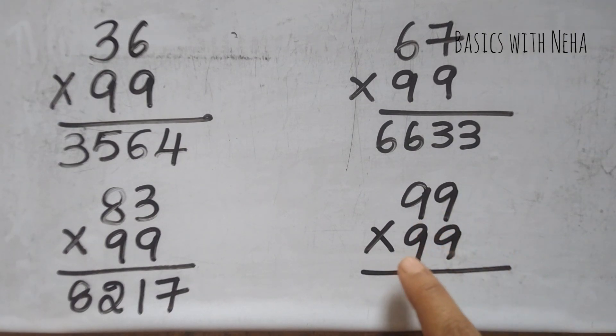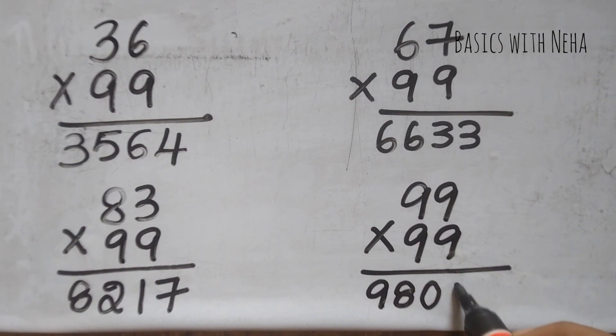Let's try 99 into 99. Decrease by one number which becomes 98. 9 minus 9 is 0, 9 minus 8 is 1.